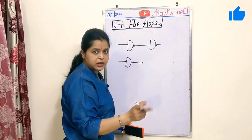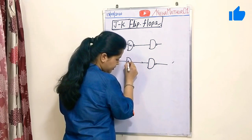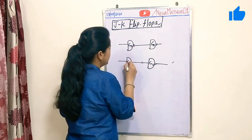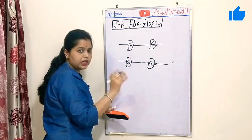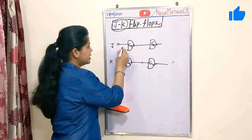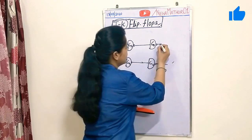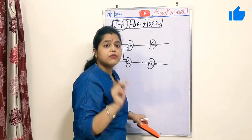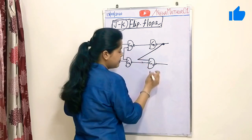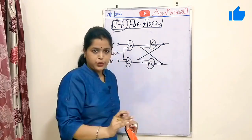I am using NAND gates for implementation, and like SR flip-flop, here we will again use four gates named G1, G2, G3, and G4. Since this is a JK flip-flop, its main inputs are J and K, and I am using a single clock to initiate the circuit. The circuit again follows the cross-coupling structure, meaning the output of gate G1 is connected with the input of G2 and vice versa.